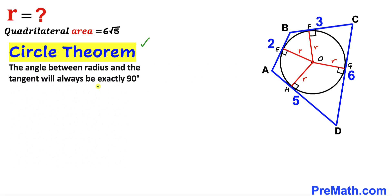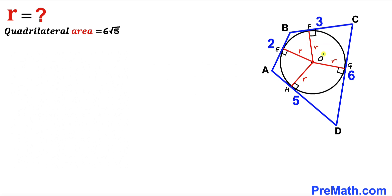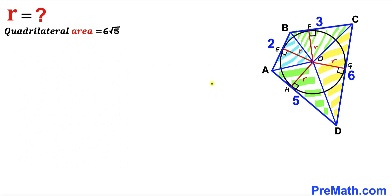Recalling the circle theorem: the angle between the radius and the tangent line is always 90 degrees. So all these angles are 90 degrees, since the side lengths are the tangent lines and these are the radii. Connecting center O to all vertices A, B, C, and D gives us four triangles — triangle AOB, triangle BOC, triangle COD, and triangle AOD.